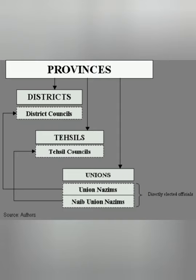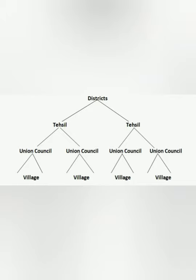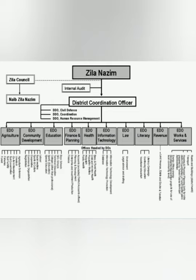You can see the hierarchy of local self-government — local public administration at the district, seal, and union level. Nassim is the political head of the district. The administration of the district is run by the district coordination officer, DCO. District administration is comprised of different departments, and the head of every department is called the executive district officer, EDO.